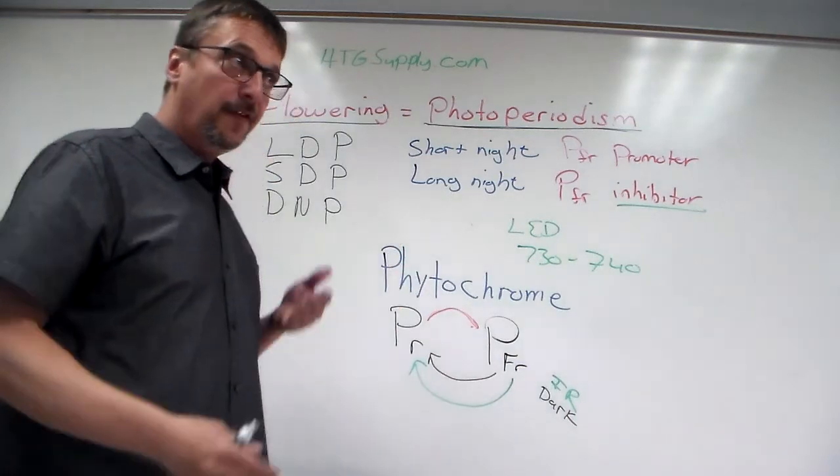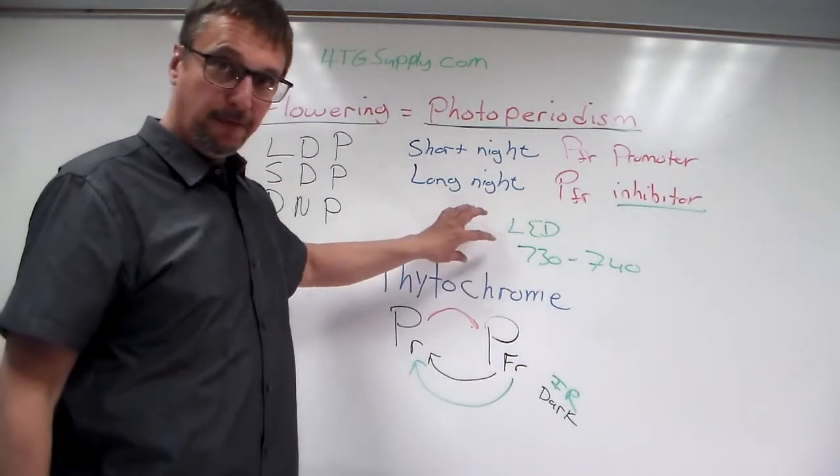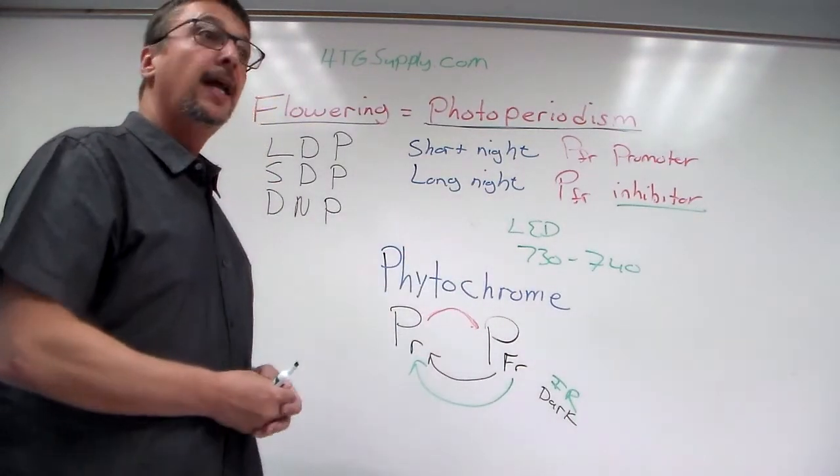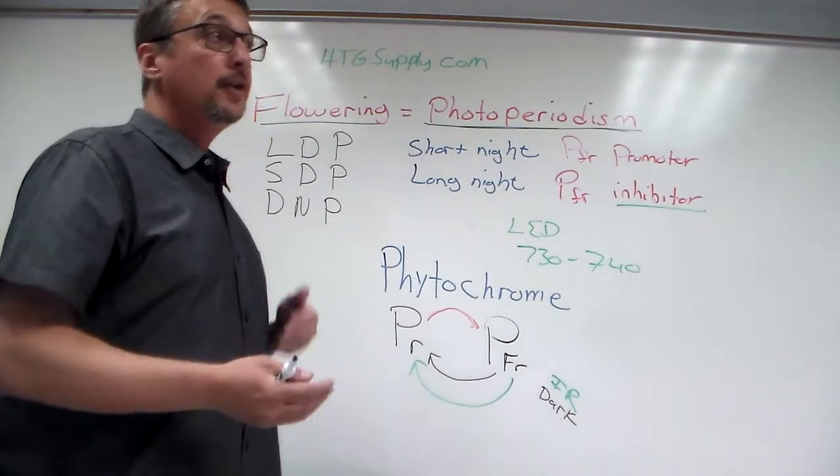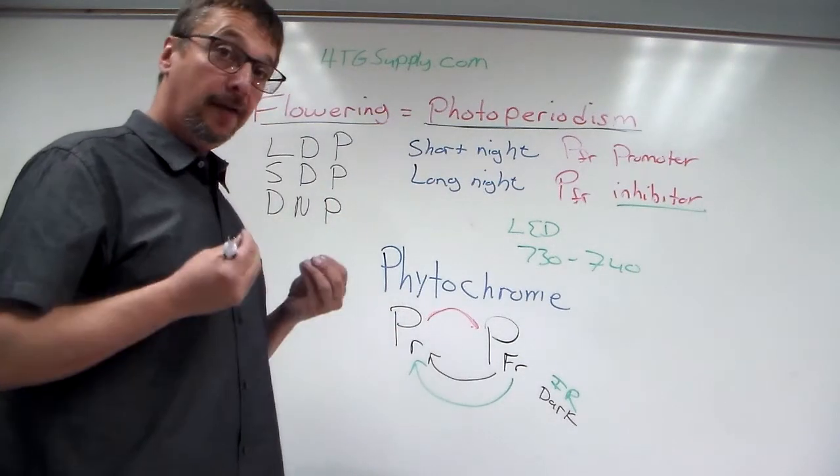So I would say maybe 5 to 10 minutes of infrared light before you start your night cycle and see what that does to your flower. You can keep trying to give a little bit more, but you have to be careful.